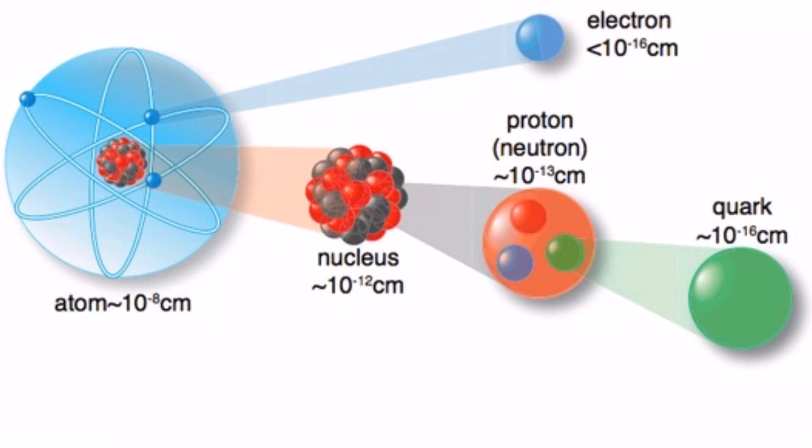Remember how atoms were once considered the smallest particles that make up matter? And how it was eventually discovered that an atom is made up of smaller things called subatomic particles like protons and neutrons?